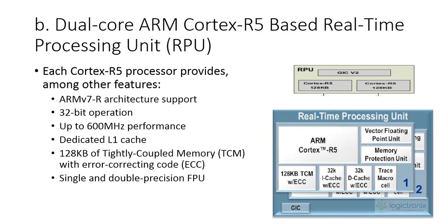The ARM Cortex-R5 RPU is suited for security-based and real-time processing applications. When real-time data inputs need to be processed with real-time outputs, the RPU handles that. The APU is good for booting Linux and embedded applications that command the programmable logic. The RPU is good for bare-metal processing, real-time processing, and security enablement, featuring a floating-point unit and memory protection unit that allow vector floating-point operations and memory security.